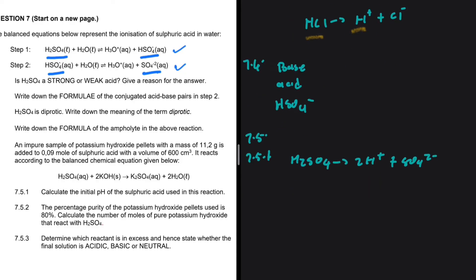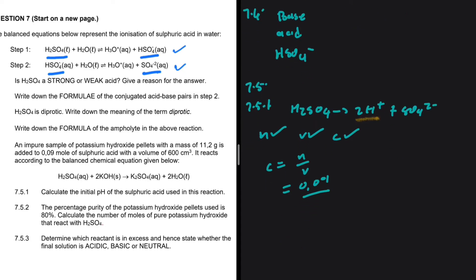So let's take a look at the given information. We have the number of moles of sulfuric acid and the volume. We can find the concentration. We want to find the concentration so that we can use it to find the concentration of H plus and therefore find the pH. So concentration is number of moles divided by volume. Number of moles is 0.09. The volume is 600 centimeter cubed divided by 1000 to convert it to decimeter cubed, which is 0.6.